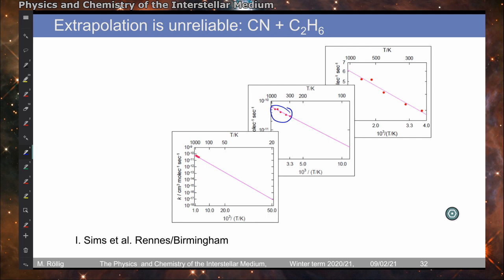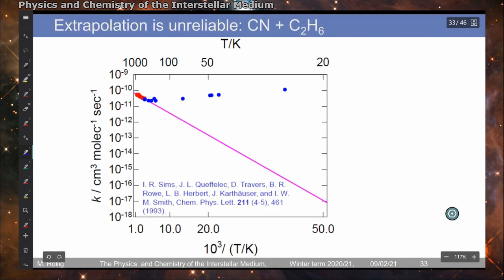And when you extrapolate, you would expect the rate coefficients at 20K to be 7 orders of magnitude weaker. However, as it turns out, when experiments at different temperatures are performed, this linear behavior, this linear trend is clearly violated below room temperature.